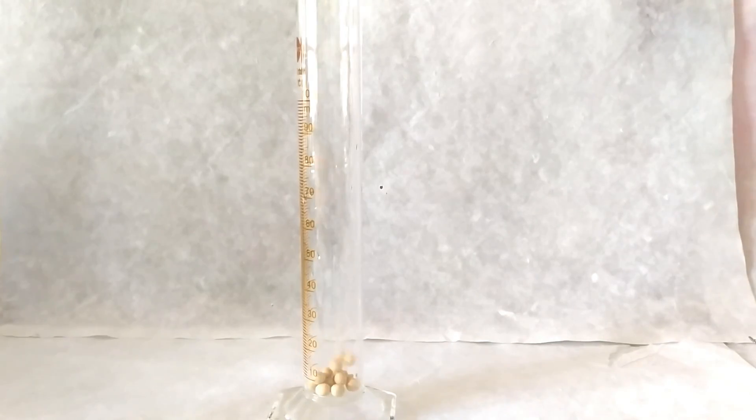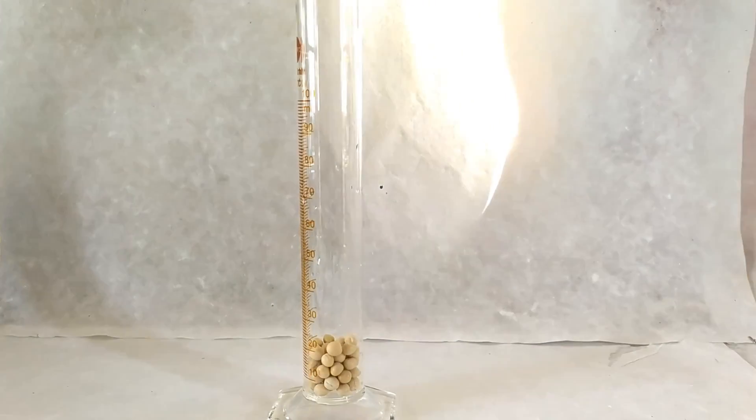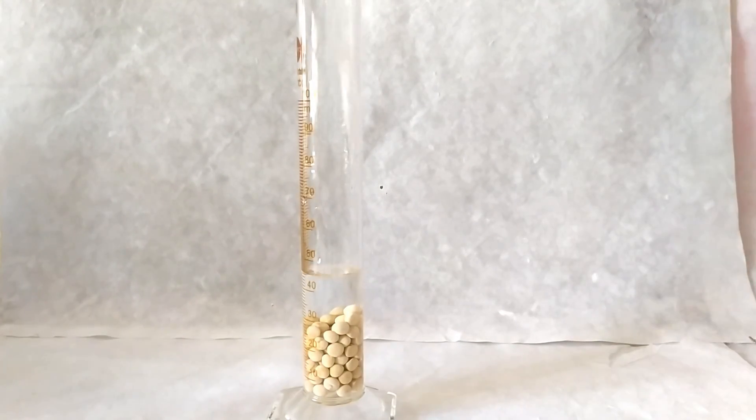Begin the experiment by adding a certain volume of dry seeds into the graduated cylinder. Add a certain volume of water to the seeds. Leave the seeds in the cylinder overnight.